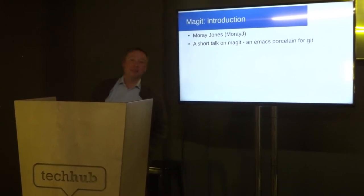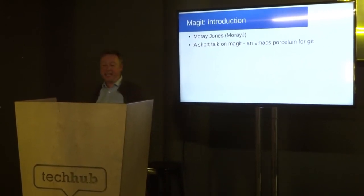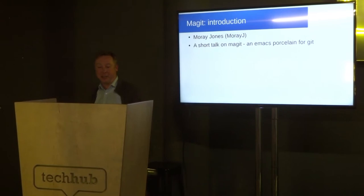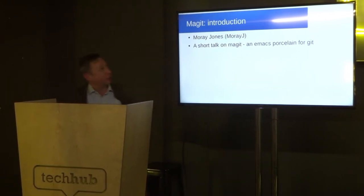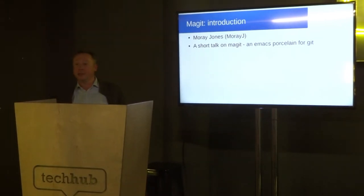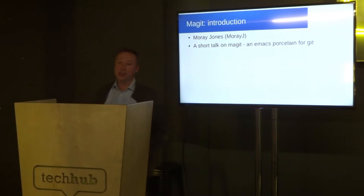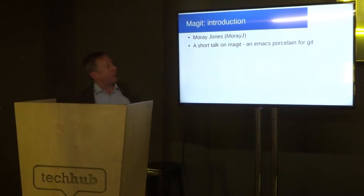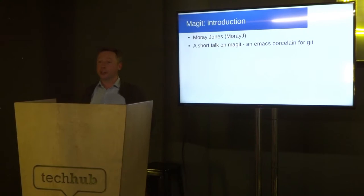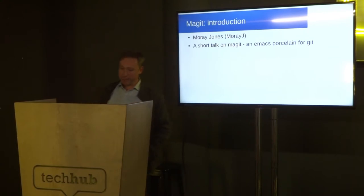Good evening. I'm doing a short talk on Magit. This is more of an introduction to me rather than magic. My name is Moray Jones. I'm on GitHub as MorayJ, which isn't very imaginative, but it separates me from all the other Morays, so you know who I am.